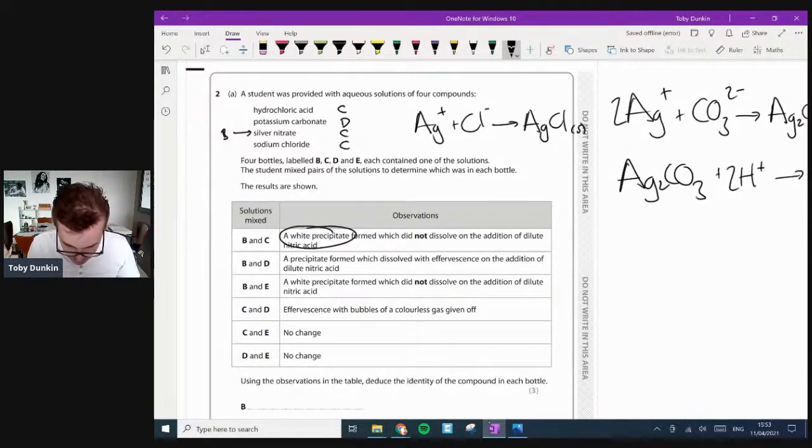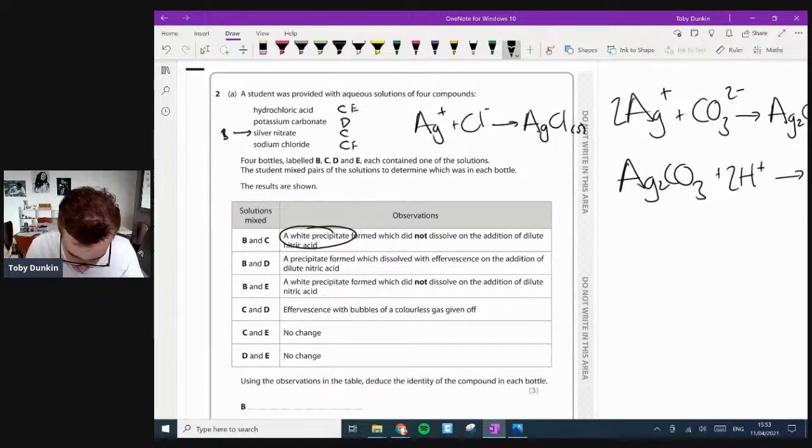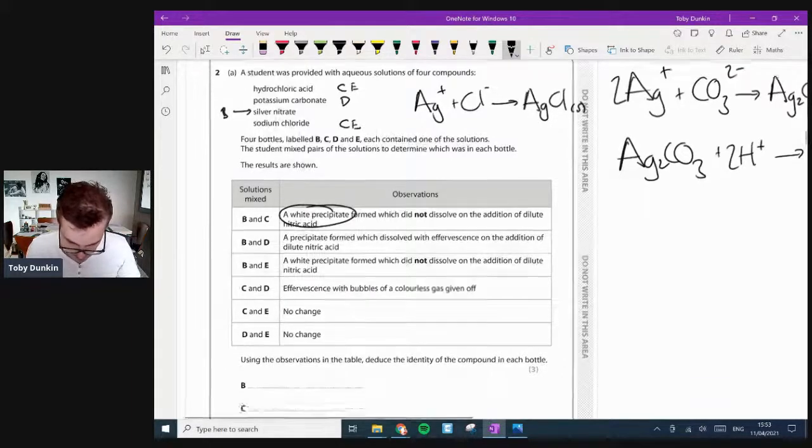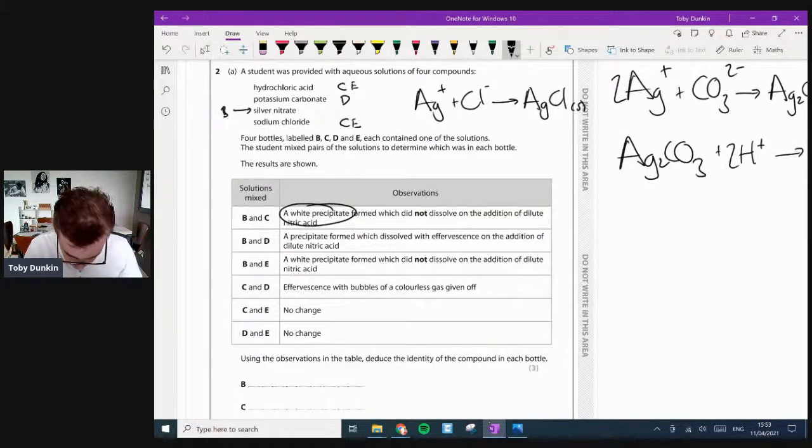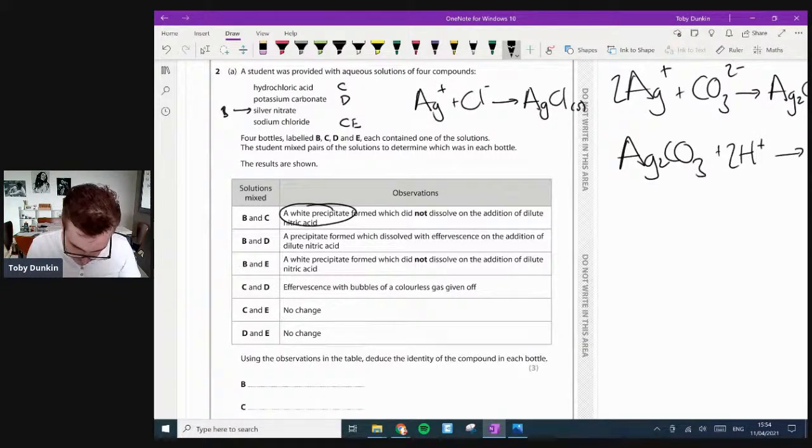B and D. A precipitate forms which dissolved with effervescence on the addition of nitric acid. Right, so we kept one the same and changed the other. And we've kept the white precipitate, which means silver nitrate is probably going to be B. That's going to be B. And then D is going to be the carbonate because it redissolved. So B's are all gone at that point. Next. B and E, a white precipitate formed, which did not dissolve on the addition of nitric acid.